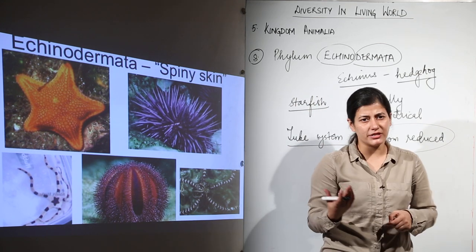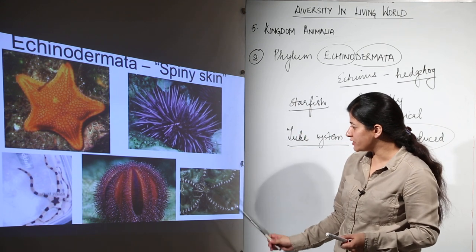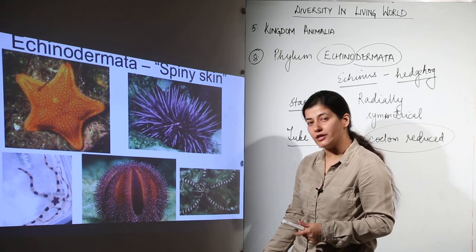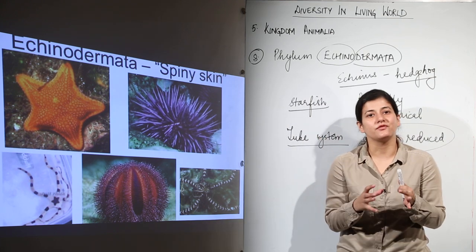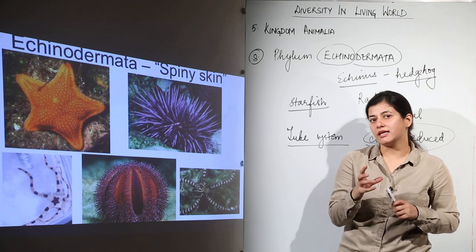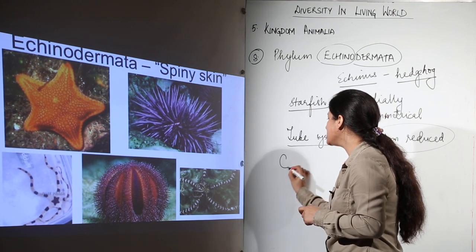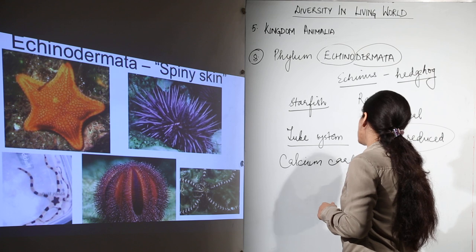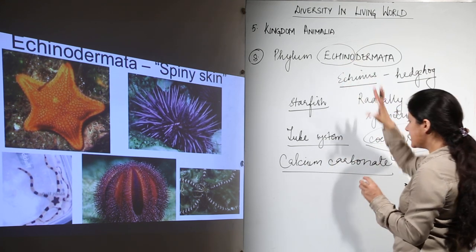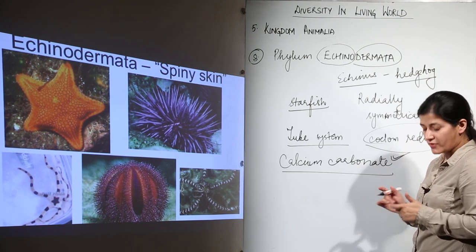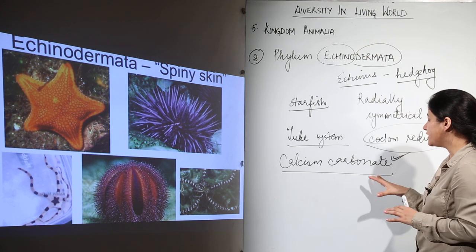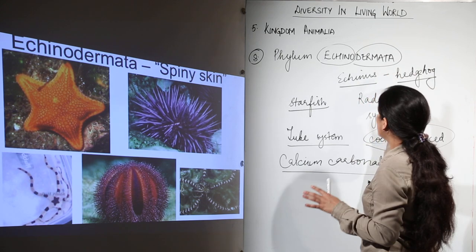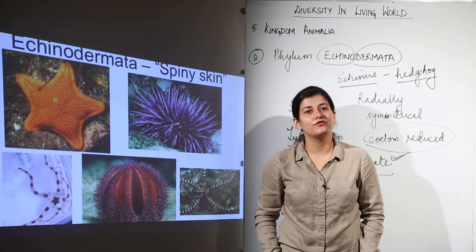We have the example of starfish, brittle star, and sea urchin — there are many examples in the case of echinoderms. The most visible characteristic feature is that they will have a spiny skin, which is due to calcium carbonate deposition. So to summarize: calcium carbonate spines on the skin, a tube system, and radial symmetry — and with this, Echinodermata and the non-caudates are complete.